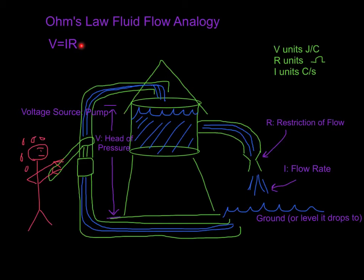Units — you know this from 200 level: volts are in joules per coulomb, R in units of ohms, and current I is in coulombs per second. In this water analogy, V is a head of pressure. If you put the water up high, it's going to have some potential energy, and when we let the water out through the pipe, it's going to cause flow — which is current. You could put a restriction in your pipe — that would be equivalent to resistance. If I have a head of water, a pressure head, it's going to want to get to a lower potential, and that will allow current to flow.